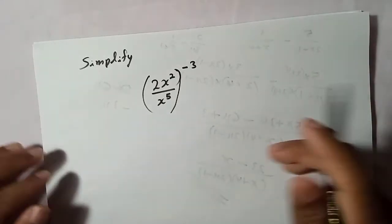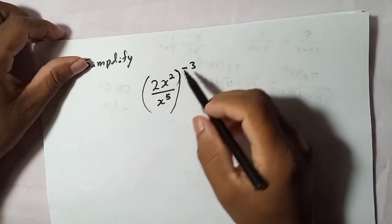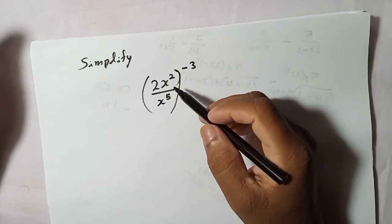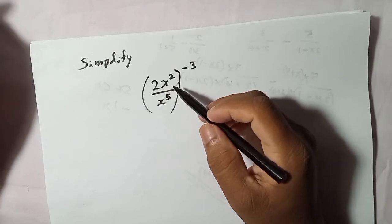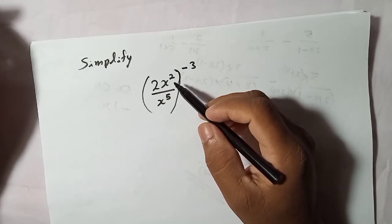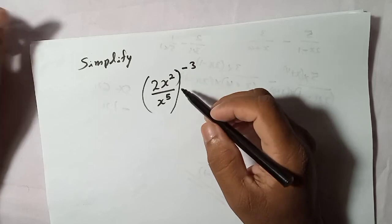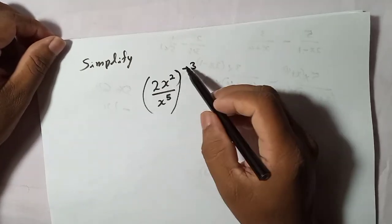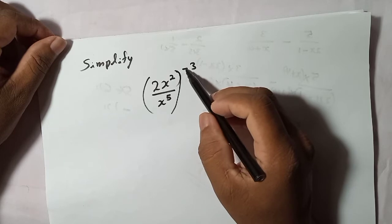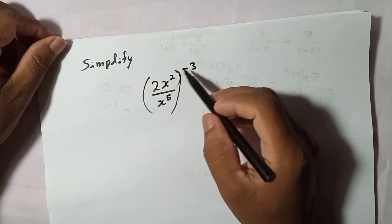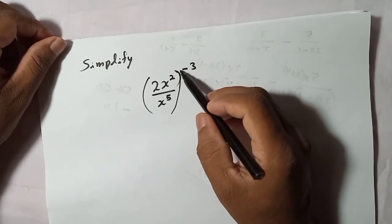Okay, now let's check how to do this question. I did this type of question earlier also, so you can check that. Here you can see this is a negative index, so like I told you earlier, if you have a negative index...